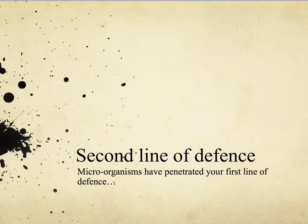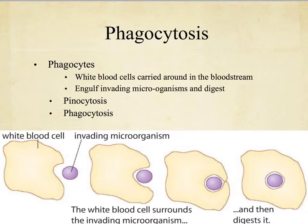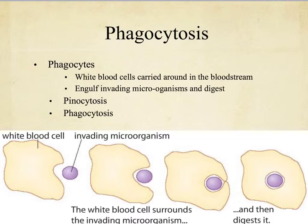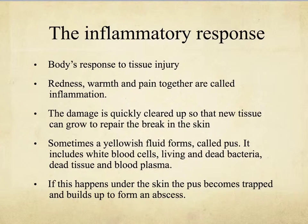If microorganisms have penetrated your first line of defense, the first phase of the second line is phagocytosis. White blood cells are carried around in the bloodstream and engulf invading microorganisms and digest them — this is phagocytosis, or cell eating, as opposed to pinocytosis, which is cell drinking. Macrophages are also discussed in this context.